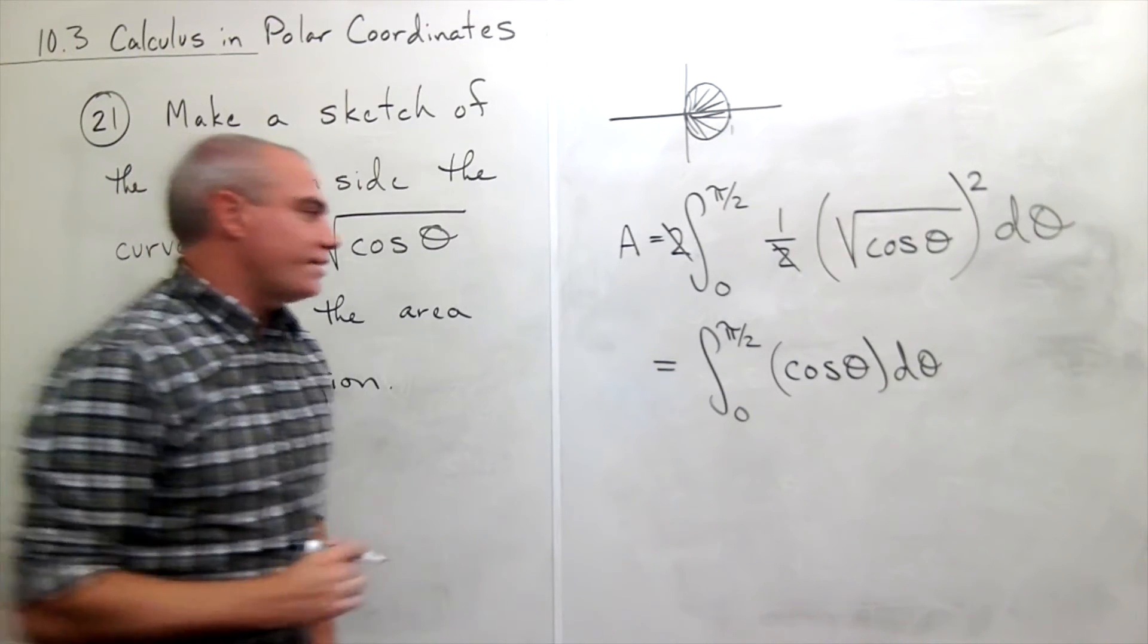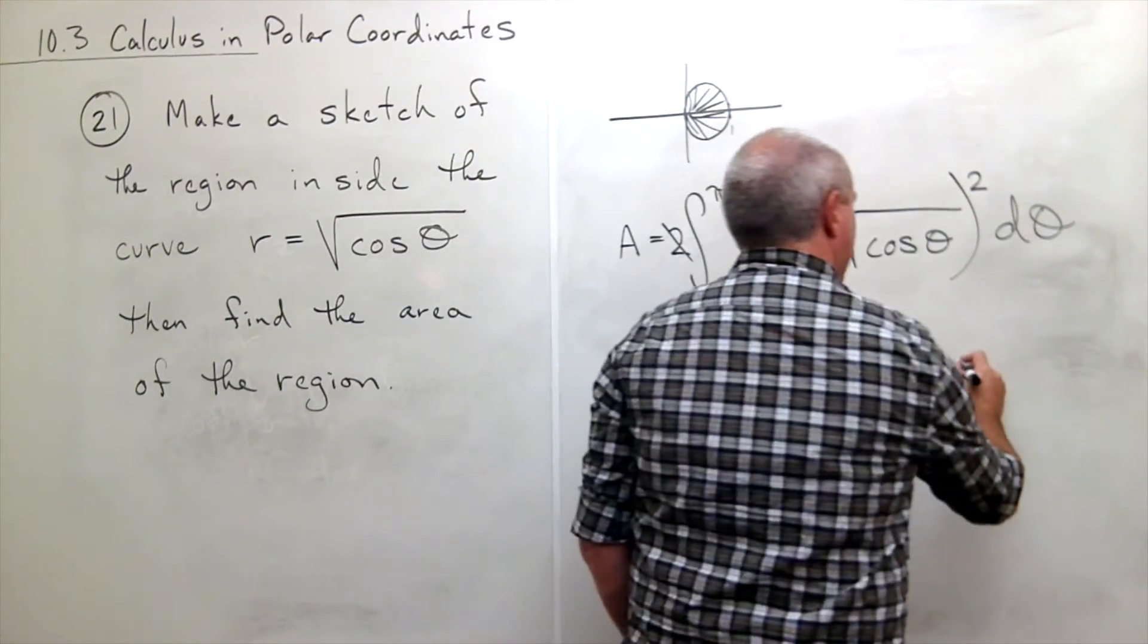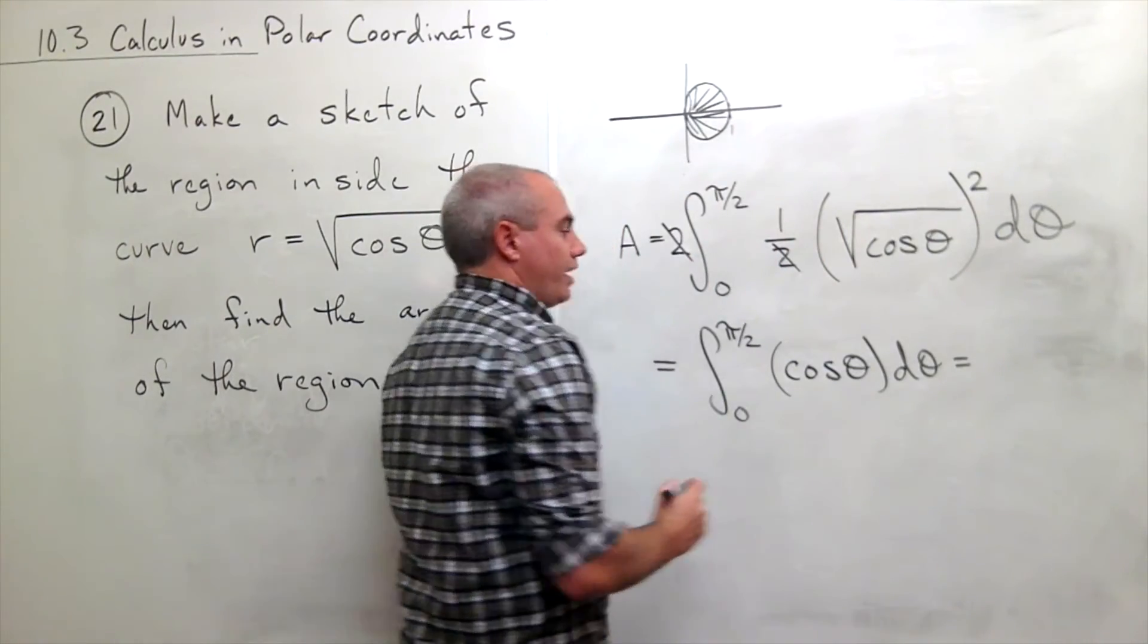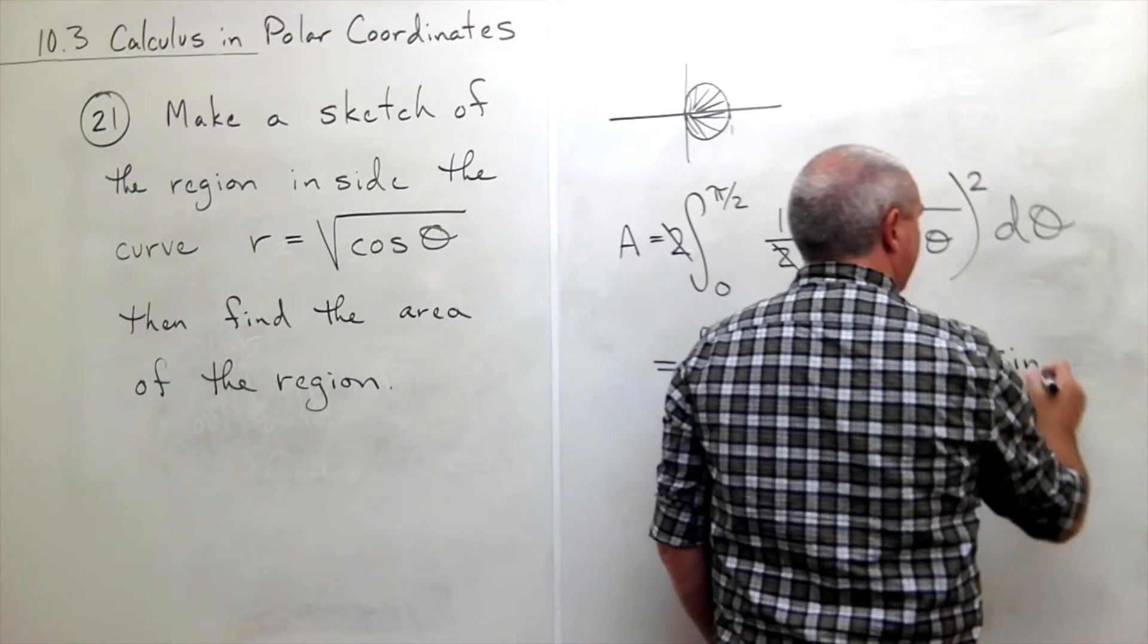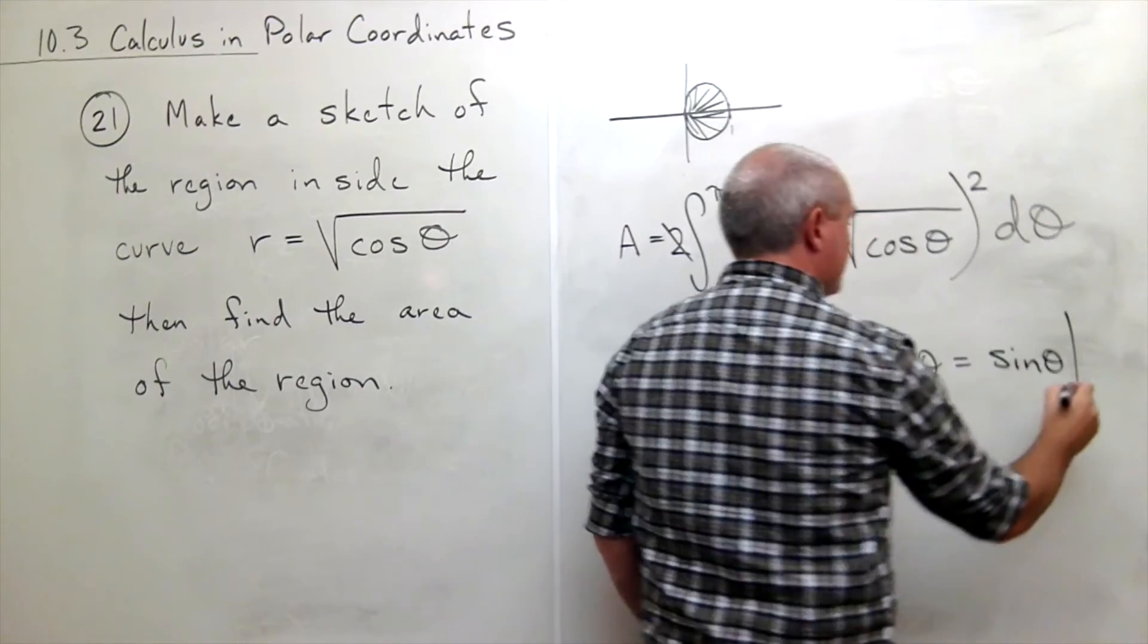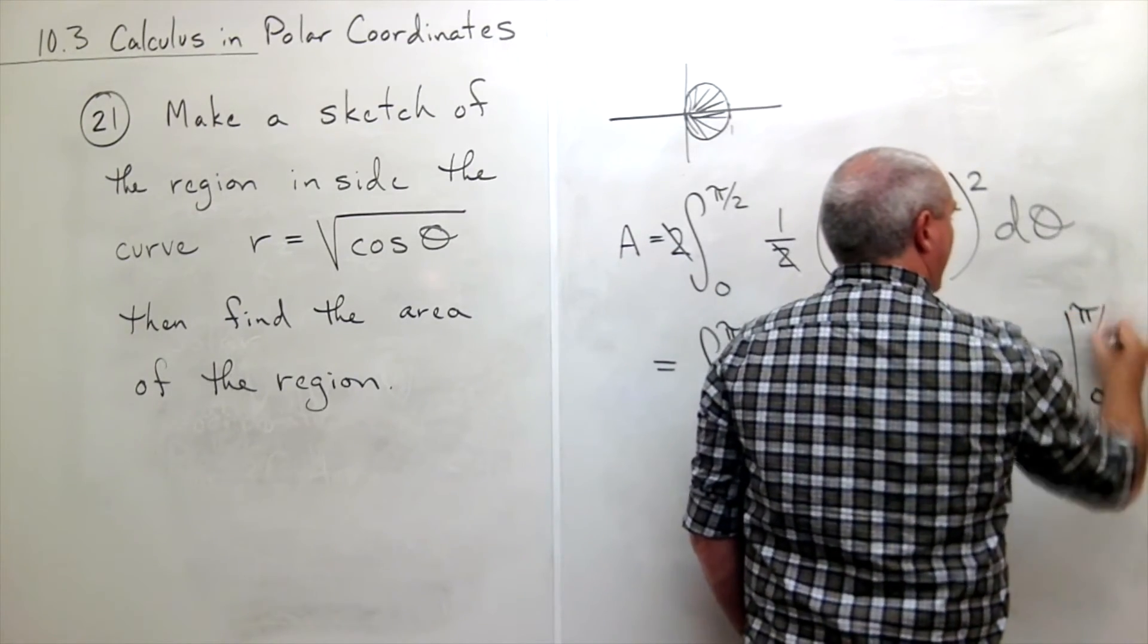So let's take an antiderivative. The antiderivative of cosine theta is sine theta, evaluated from zero to pi over two.